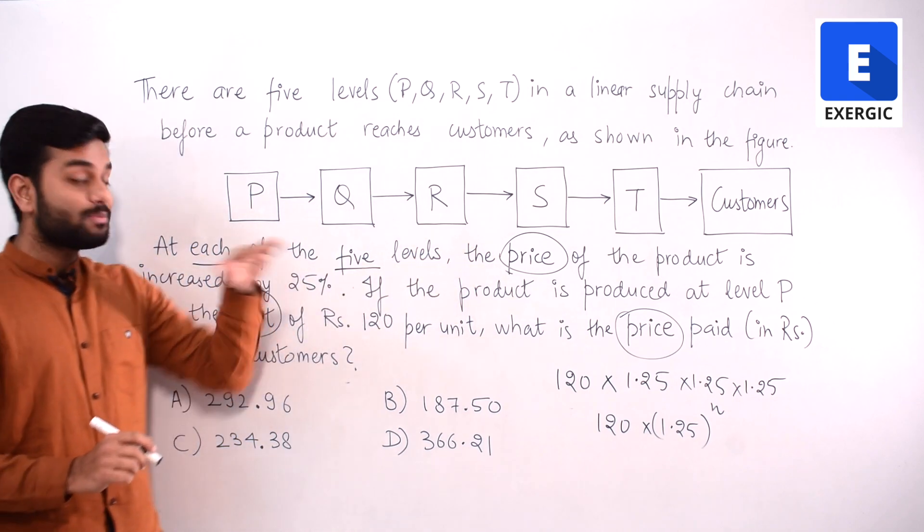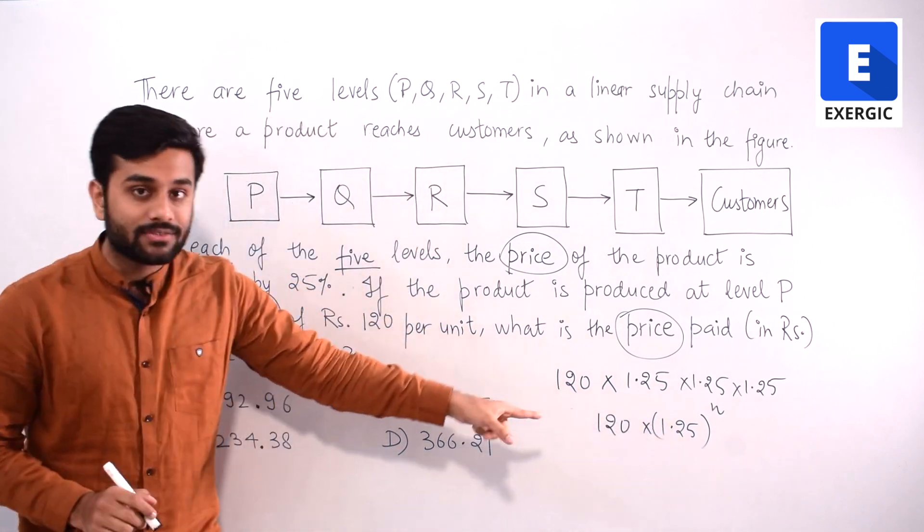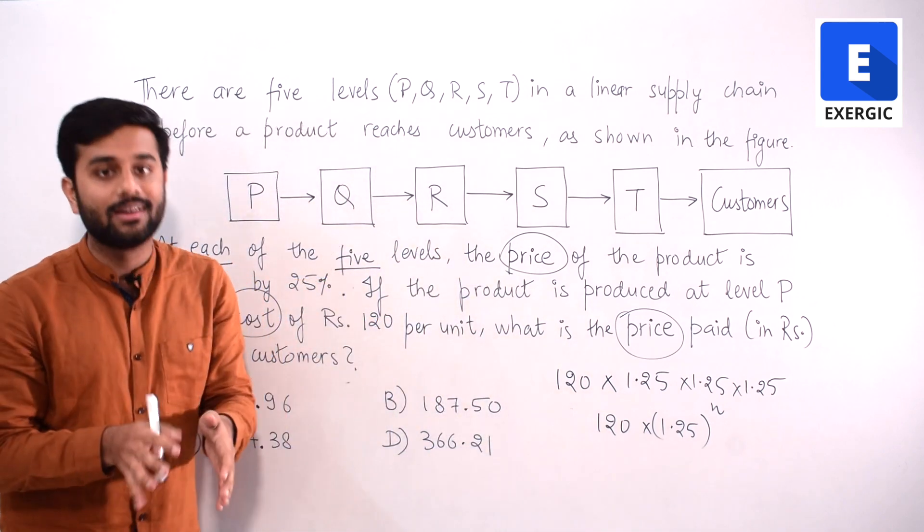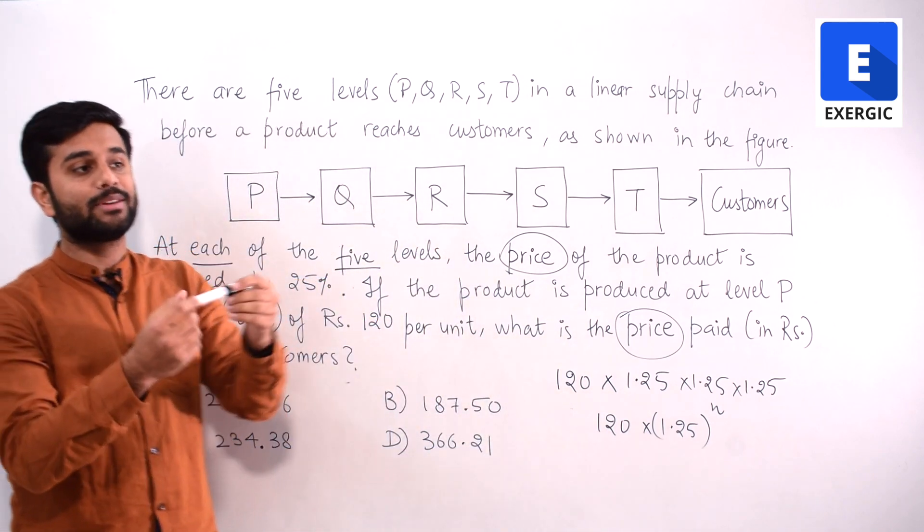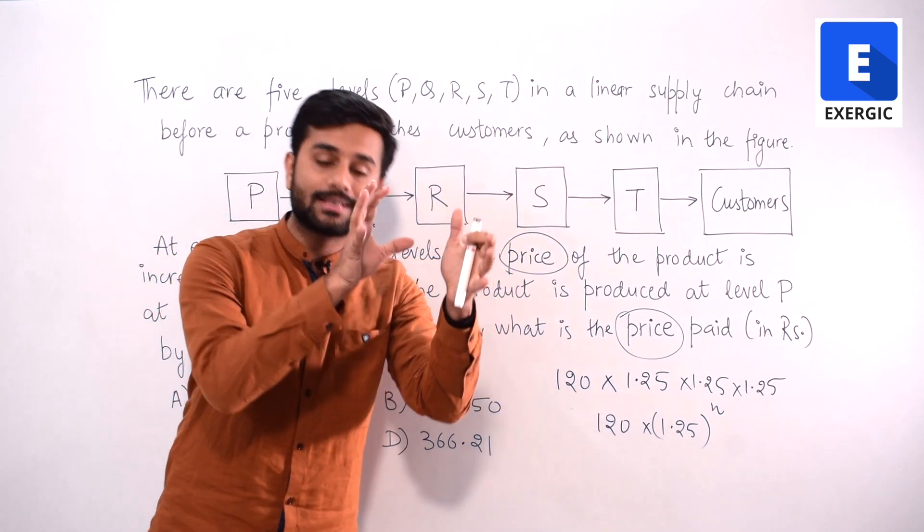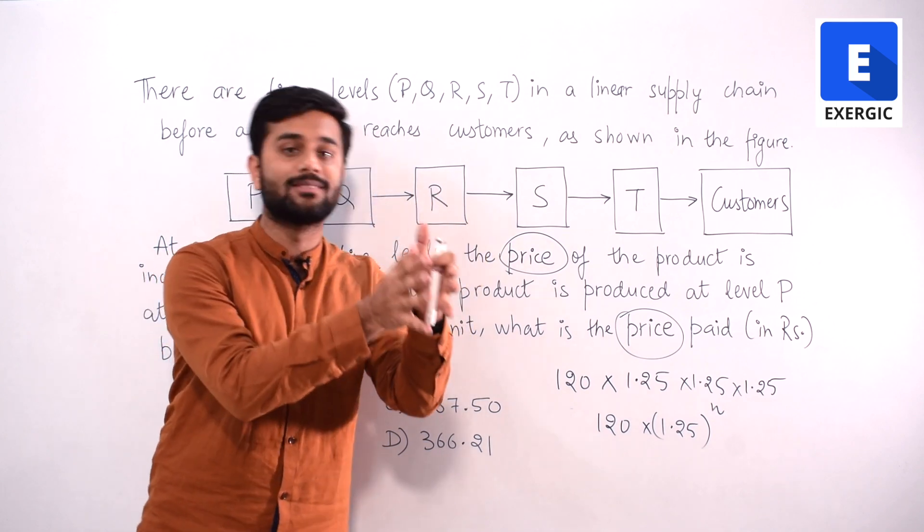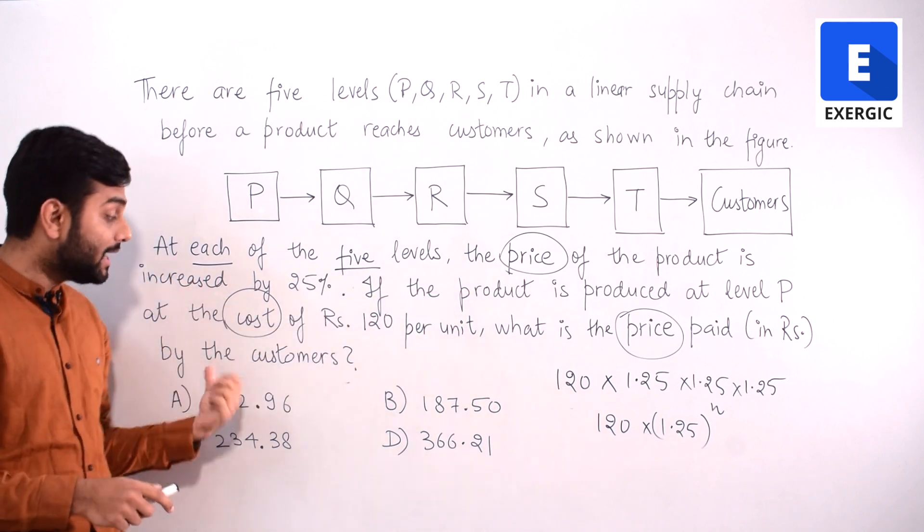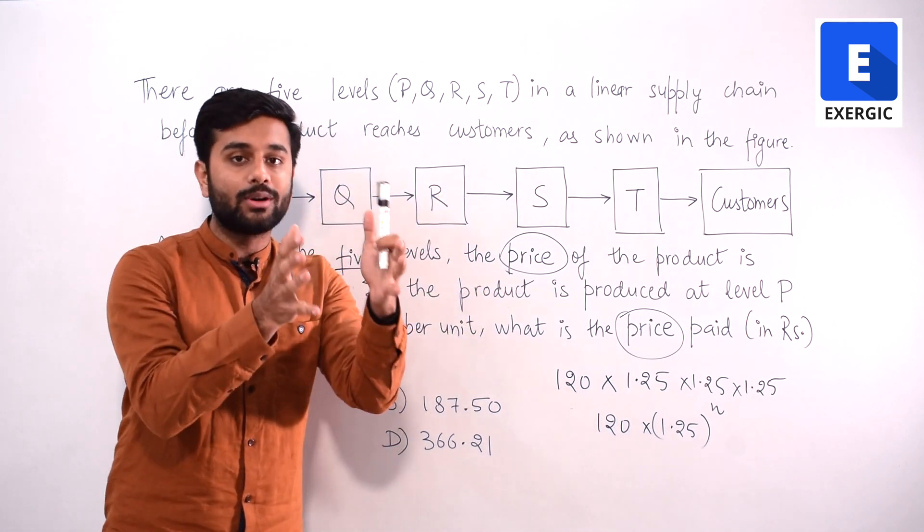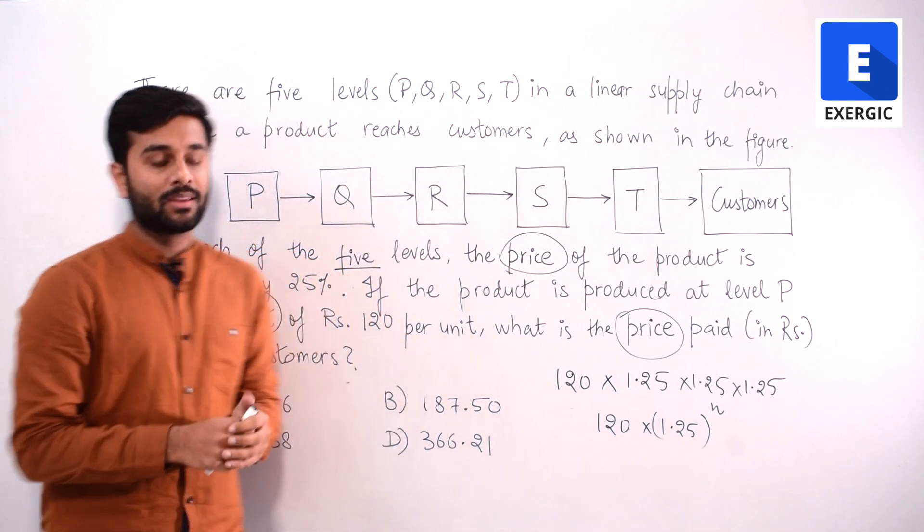The price of the product is increased by 25% at each level. And that is why the amount that you will get in the end will tell you the price that customer has to pay, because the thing will be sold to customer. So the amount that customer has to pay is the same amount at which it is selling the product. So that amount is price. That is what it is saying. What is the price paid by the customer? Because it is being sold to the customer. So the amount of price is paid by the customer.